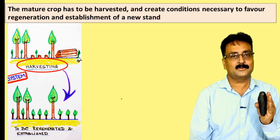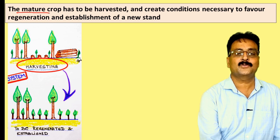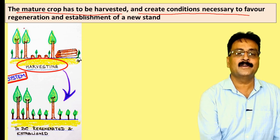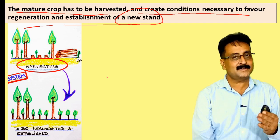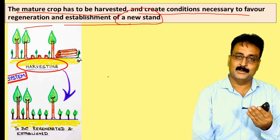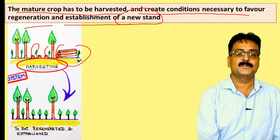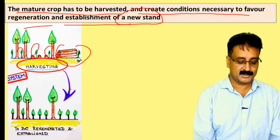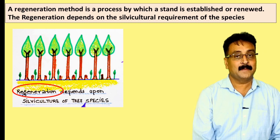The first component is harvesting. The mature crop has to be harvested to create conditions necessary to favor regeneration and establishment of a new stand. By harvesting we get revenue, and trees that have matured enough must be harvested so new crops can come up. Harvesting creates space for new regeneration, so for regeneration and establishment, harvesting is very important.